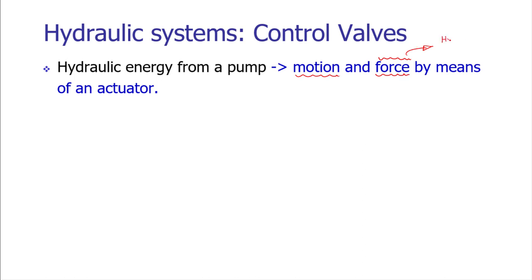A simple example is the hydraulic-based shaper operation. The hydraulic shaping machine is a material removal machine where there is relative motion between the tool and the workpiece. The workpiece is stationary and the tool is reciprocating — it translates over the workpiece material. That translatory cutting motion is developed by the hydraulic system, and the required force is generated by the hydraulic system in the shaping machine.